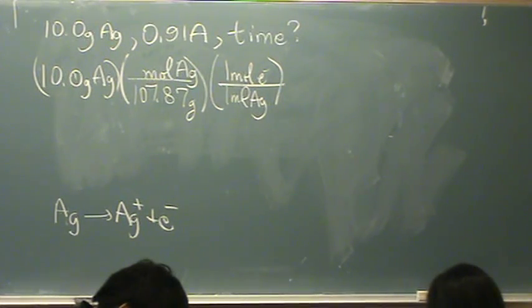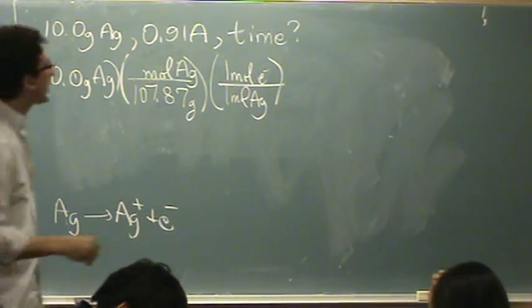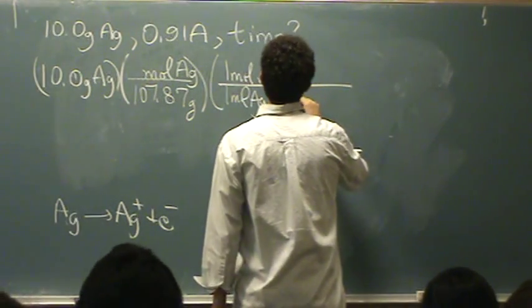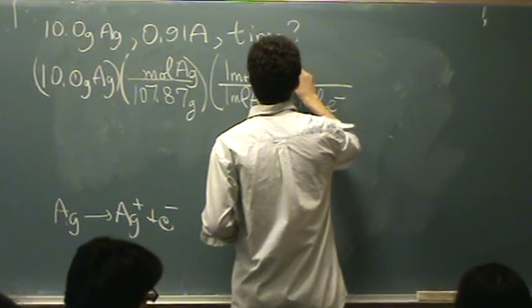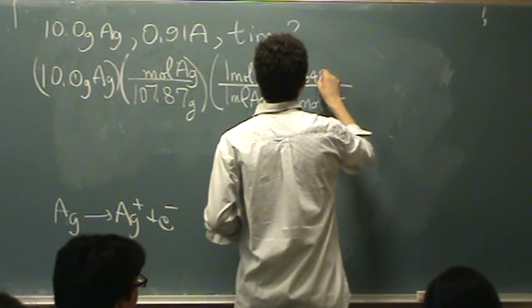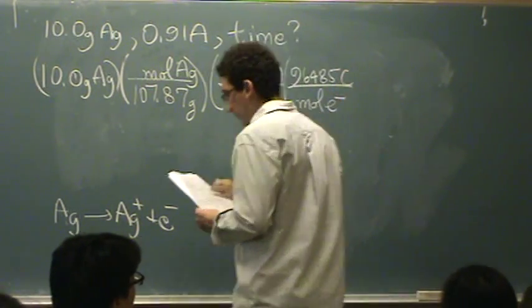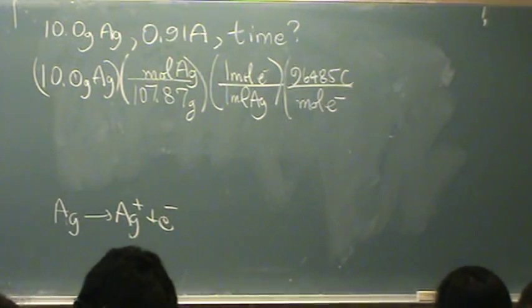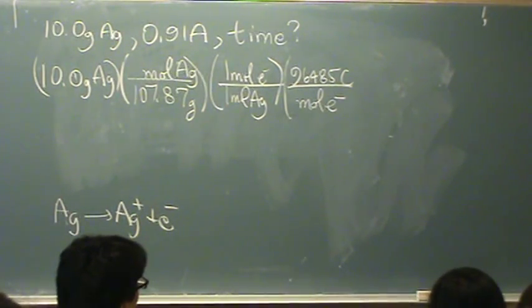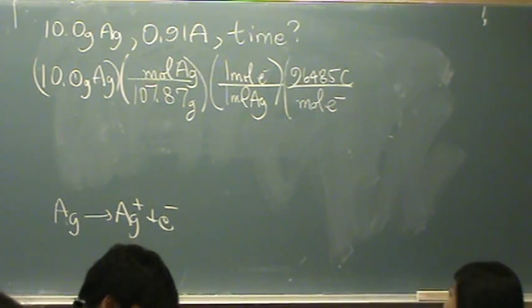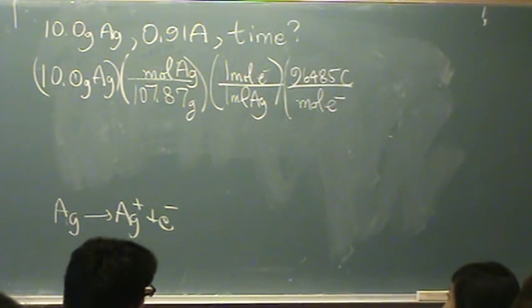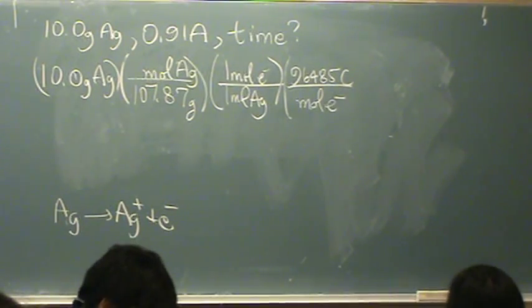But I need to change this to coulombs. If you look on the back of the test, I'll give you this constant. Hopefully I'll remember it. I think it's 96485 coulombs per mole of electron. Let me just double check that. But that sounds right in my brain. But that's the constant F. Yeah. Okay, now I'm in coulombs.